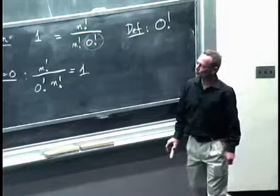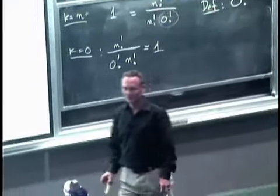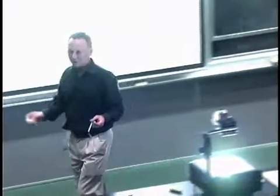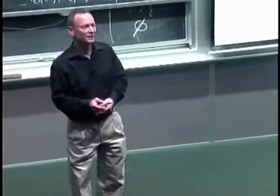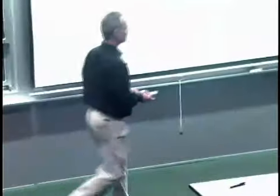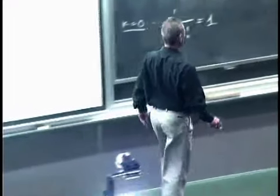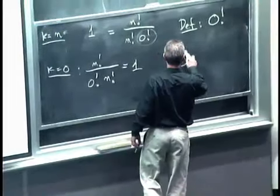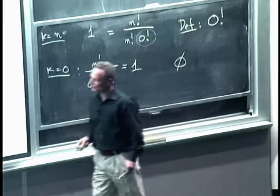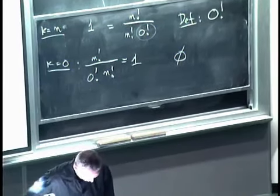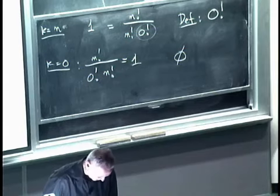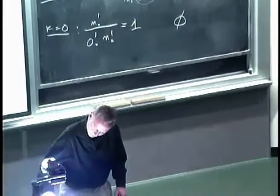So there's one subset of our set that we started with that has 0 elements. Which subset is it? It's the empty set. So the empty set is the single subset of the set that we started with that happens to have exactly 0 elements. So the formula checks in this extreme case as well. So we're comfortable using it.